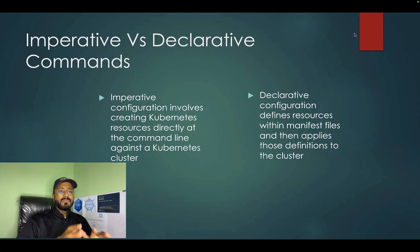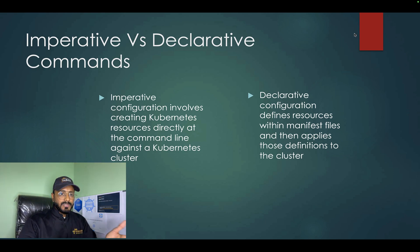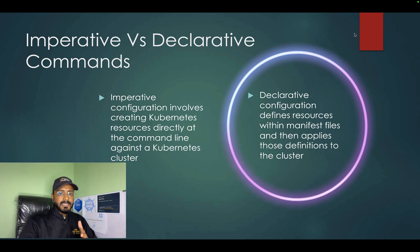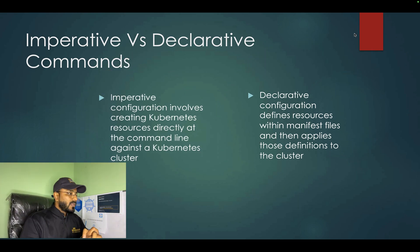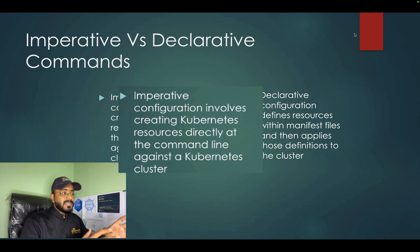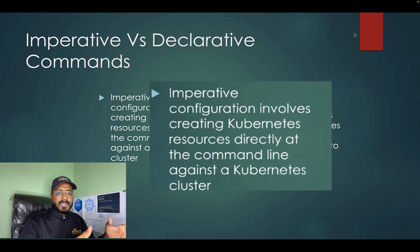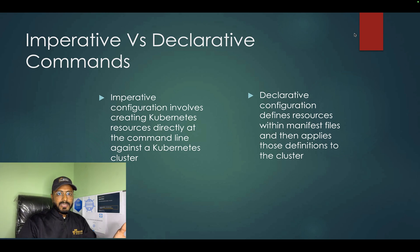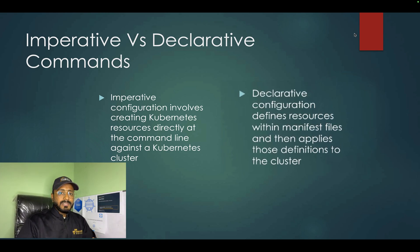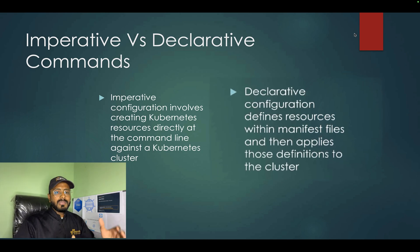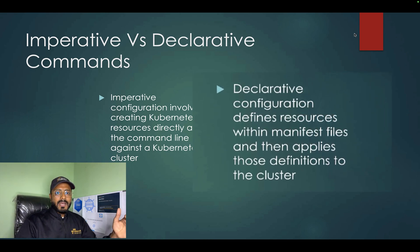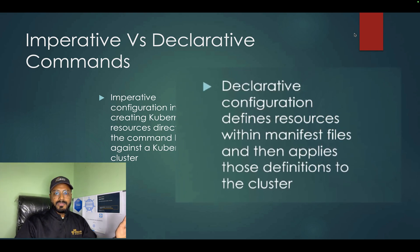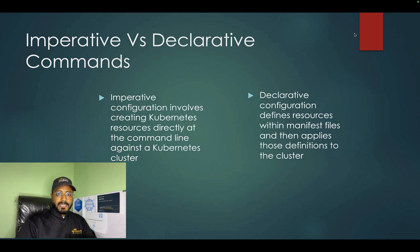In this video, I am particularly going to focus on the imperative way of answering questions. But first, let us discuss the two ways — imperative and declarative. Imperative configuration involves creating Kubernetes resources directly at the command line against a Kubernetes cluster by running commands with certain options and parameters. In declarative configuration, you write a YAML file listing all the resources you want, and when you run that file, it creates those objects and resources for you.